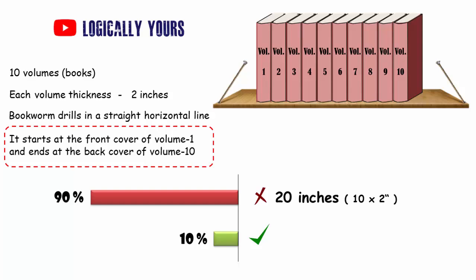The trick lies in the given information that the bookworm starts at the front cover of volume 1 and ends at the back cover of volume 10.